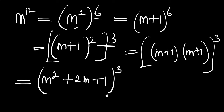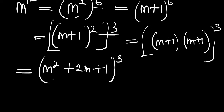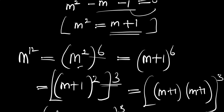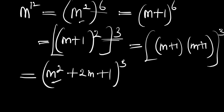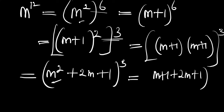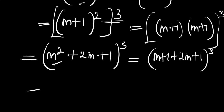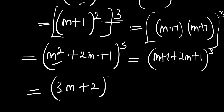Now recall that m squared equals m plus 1 from the equation we solved earlier. Inserting that, we have (m plus 1 plus 2m plus 1) to the power of 3, which simplifies to (3m plus 2) raised to the power of 3.